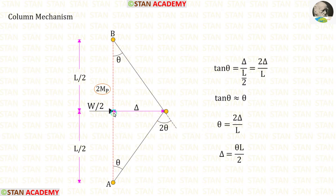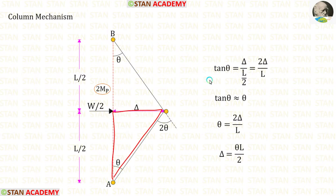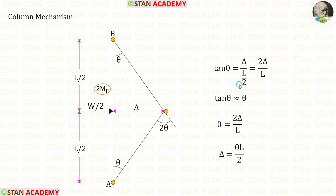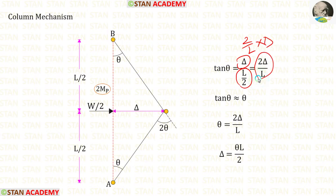Let us keep the displacement as δ. Let us take this triangle. In this triangle, tan θ = δ / (L/2). We can take L/2 inversely and multiply with δ, giving us 2δ/L.